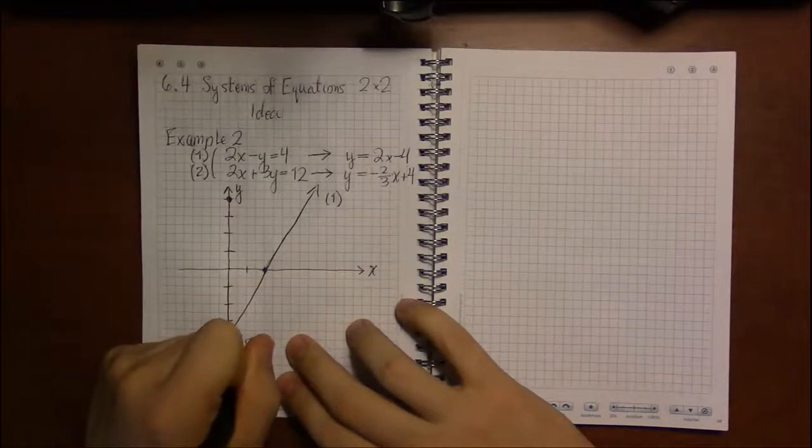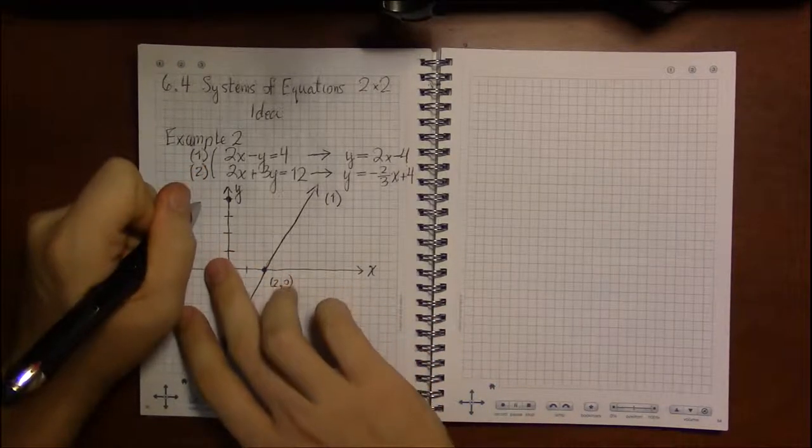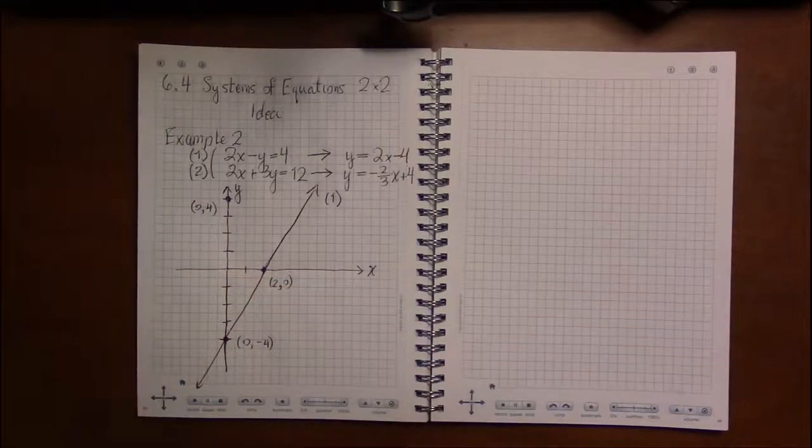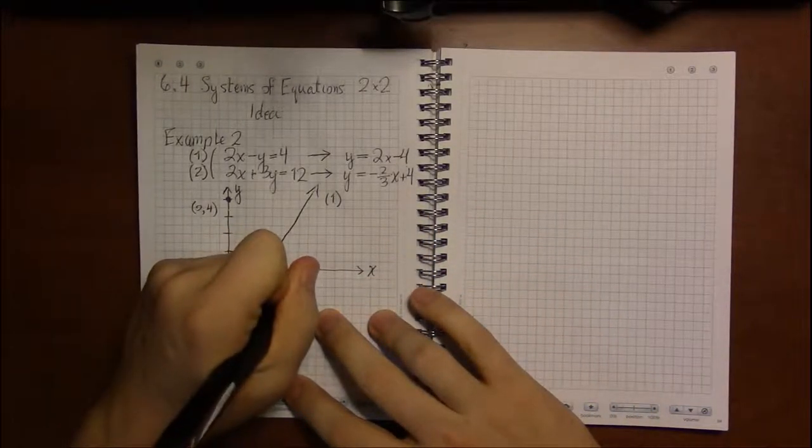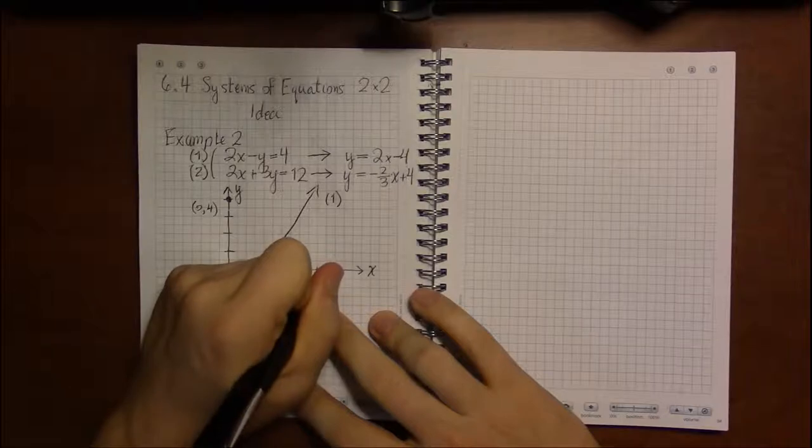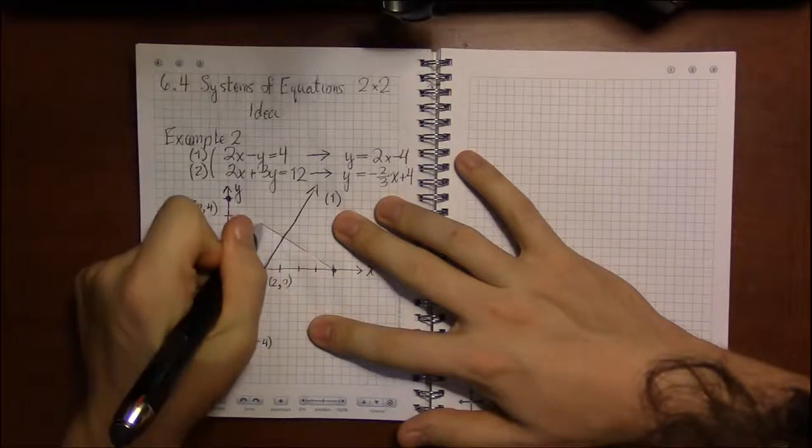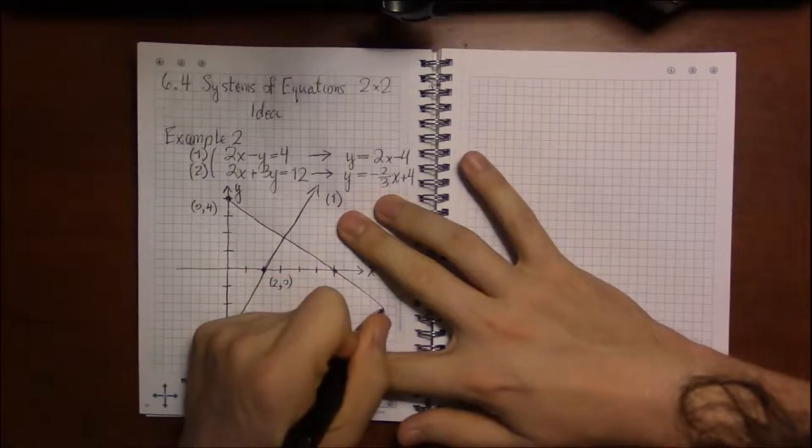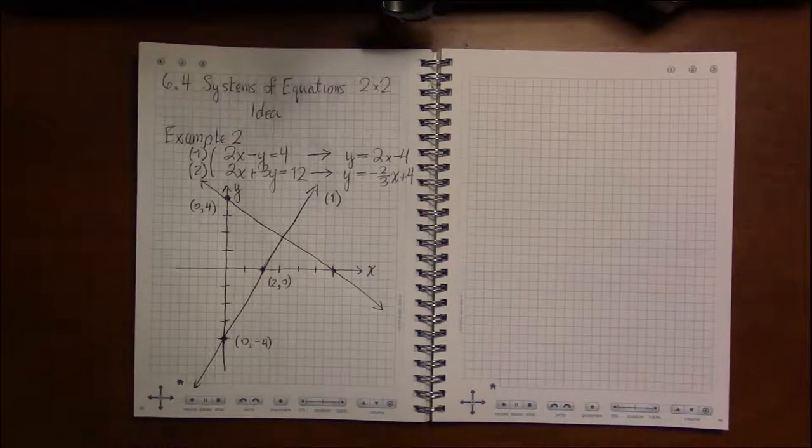Good, I should be labeling these points. Two comma zero, and this will be zero comma four being the y-intercept. And then I believe you'll find that the x-intercept is six. So if this is two, three, four, five, six, this should intersect about here, something like this. And I can already tell my drawing is not great, but we'll just deal with it.